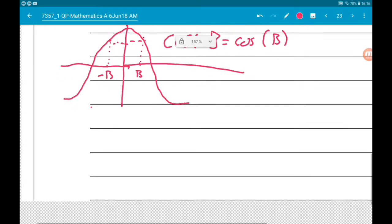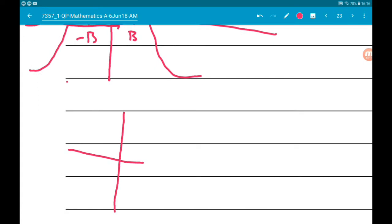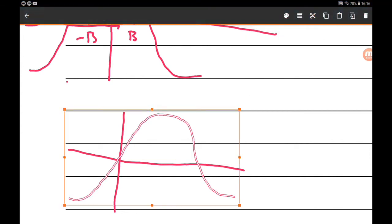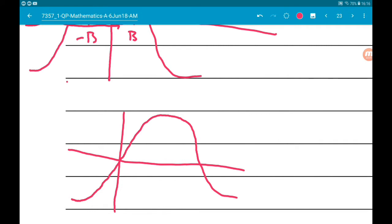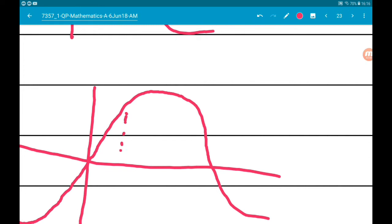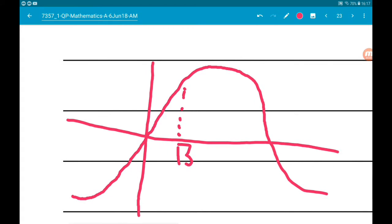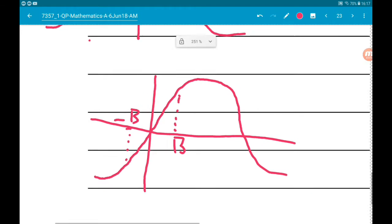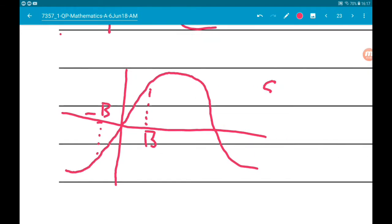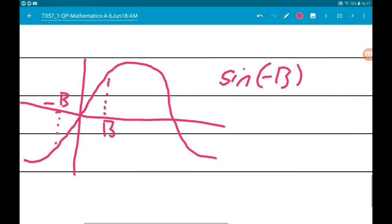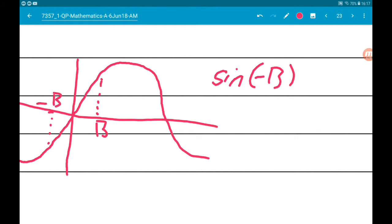Now, let's do a similar thing for sin. Okay, so let's say that B was this point here, and then minus B is going to be about that. Now, sin of B, or sin of minus B, is then going to be minus sin of B. So it's going to be the same value, but it's under the x-axis. So sin of minus B is minus sin of B.